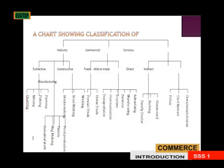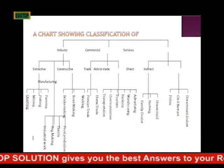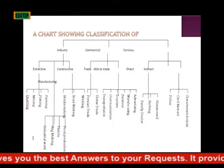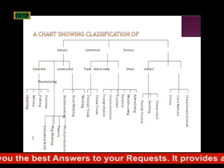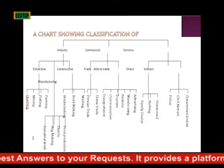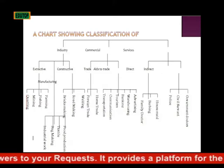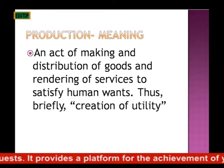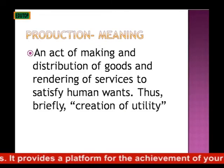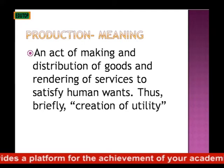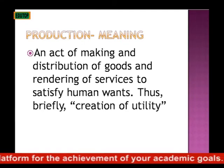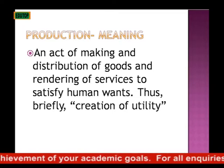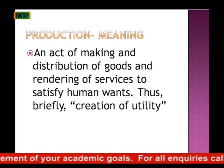Another classification of occupations from another perspective includes primary production, secondary production, and tertiary production. Production means the art of making and distribution of goods and rendering of services to satisfy human wants — thus, creation of utility.